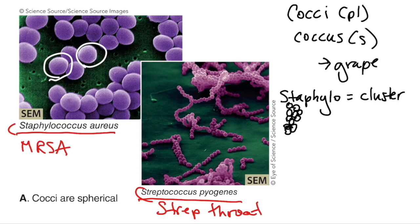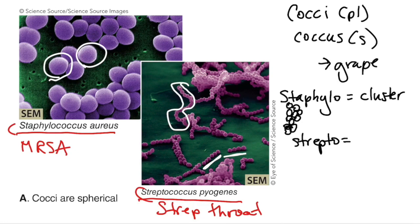Strepto, on the other hand — if you look at the picture you can probably guess what it means — it means chains. These grow in chains of varying lengths; some are short, some are long enough that they bend over. So streptococcus means chain of cocci.